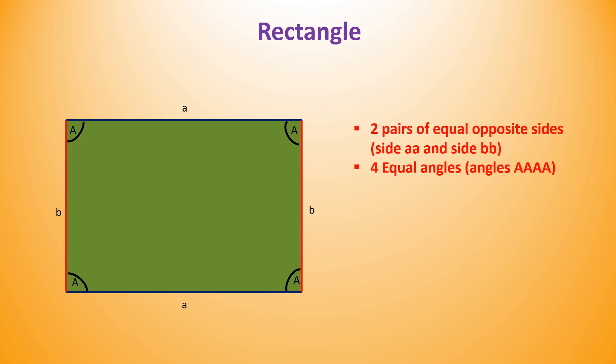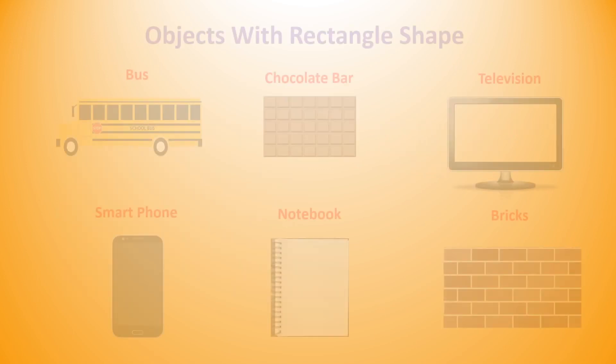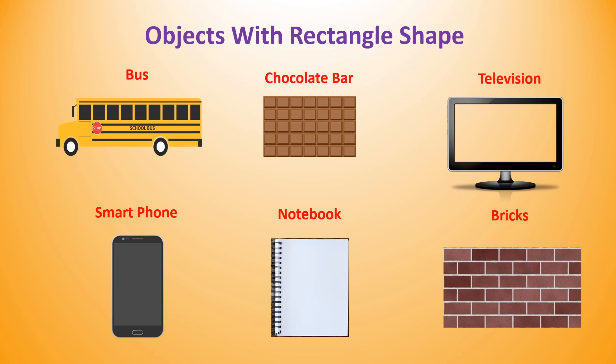Next quadrilateral 2D shape is rectangle. Rectangle has two pairs of equal opposite sides. Also, it has four equal angles.